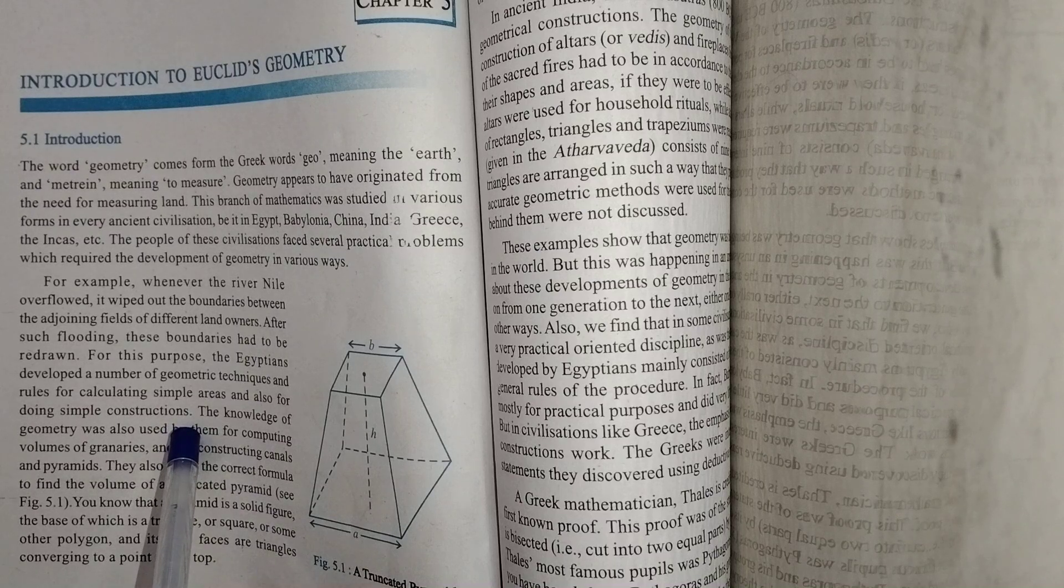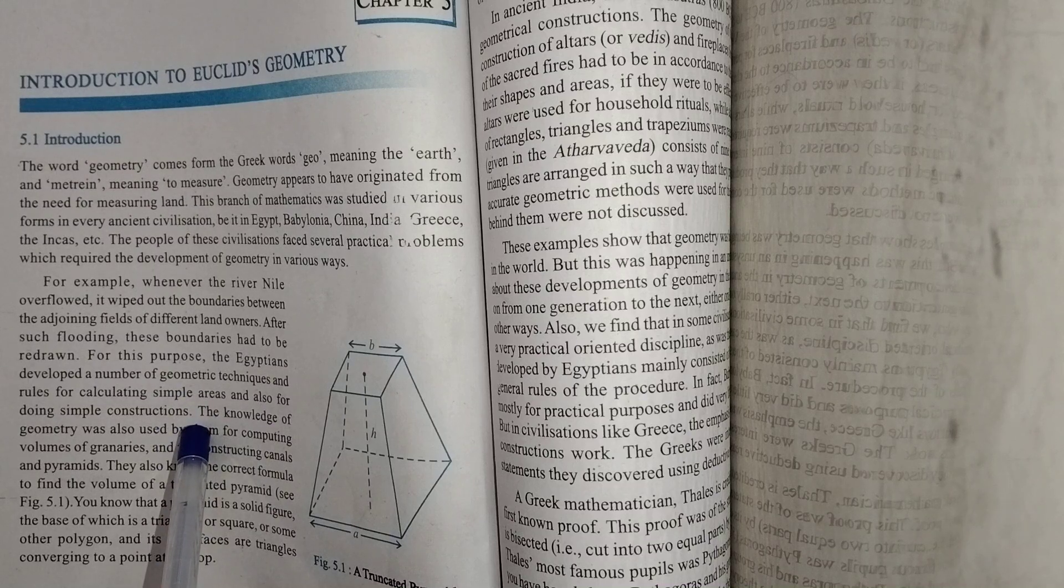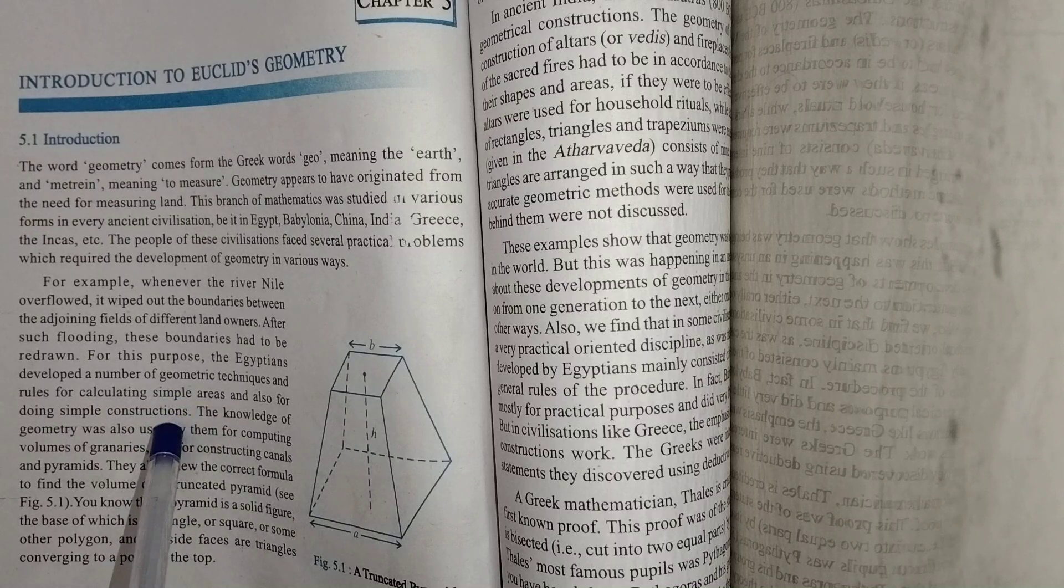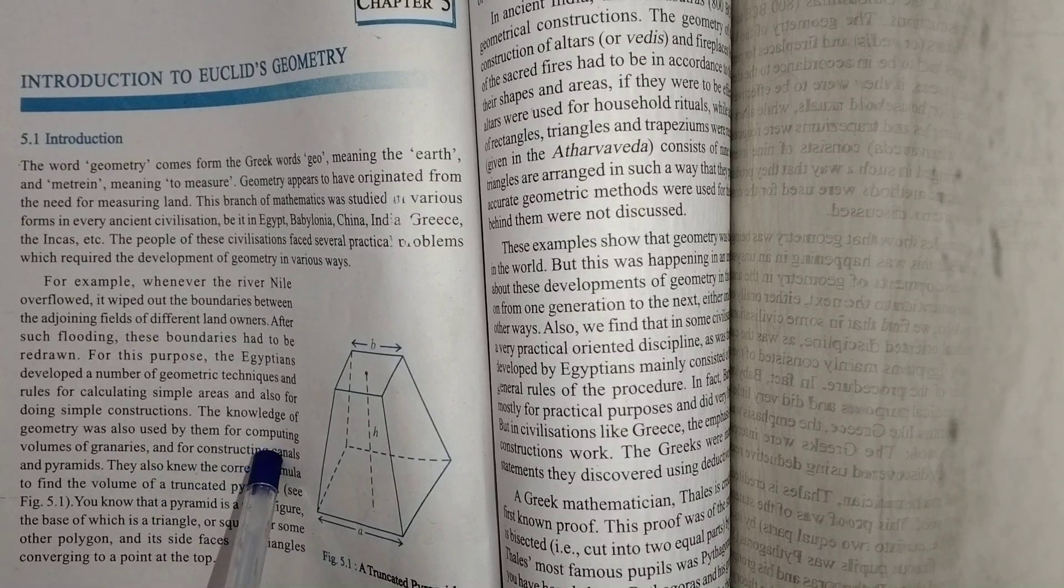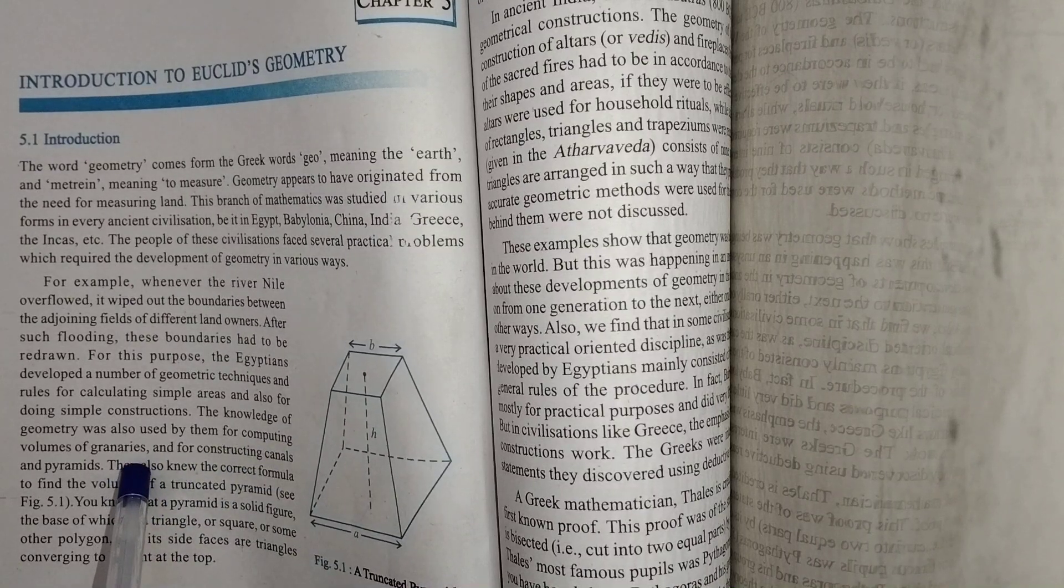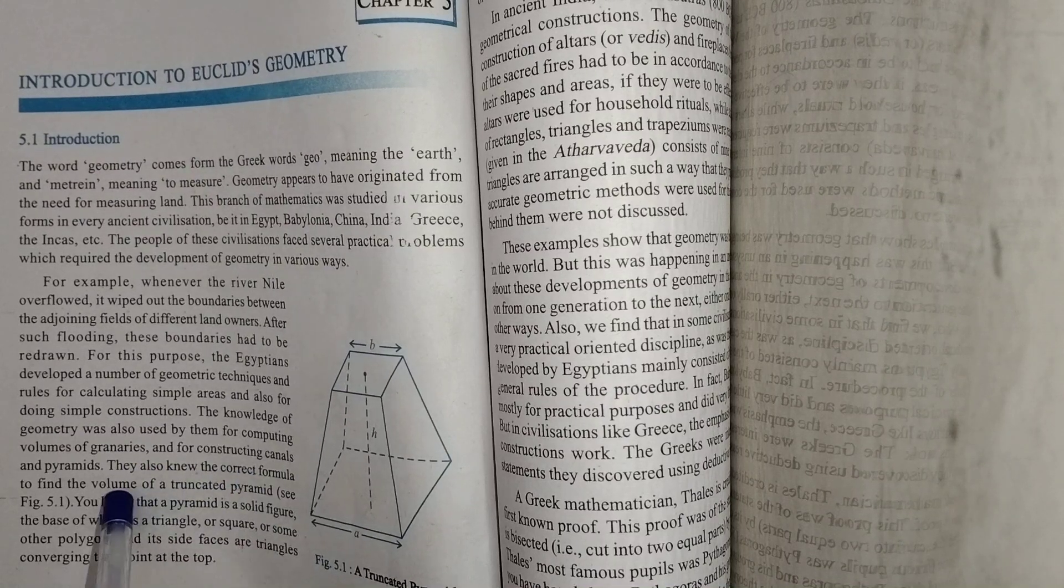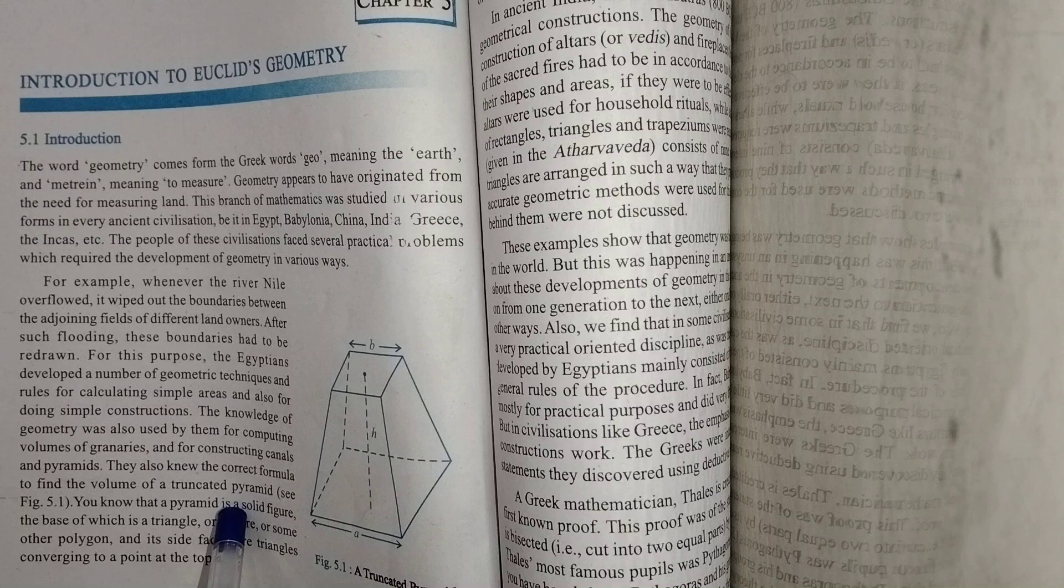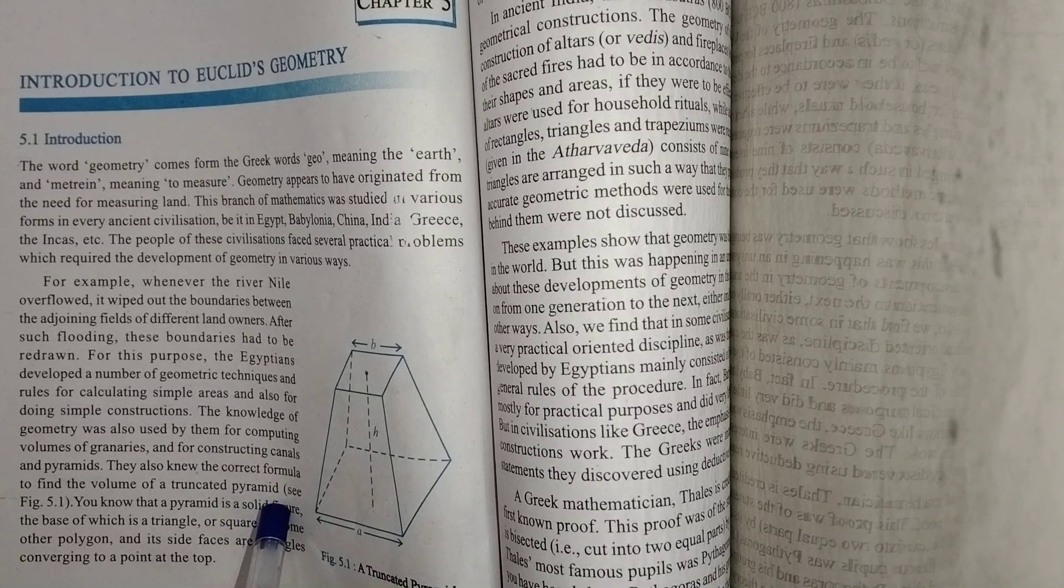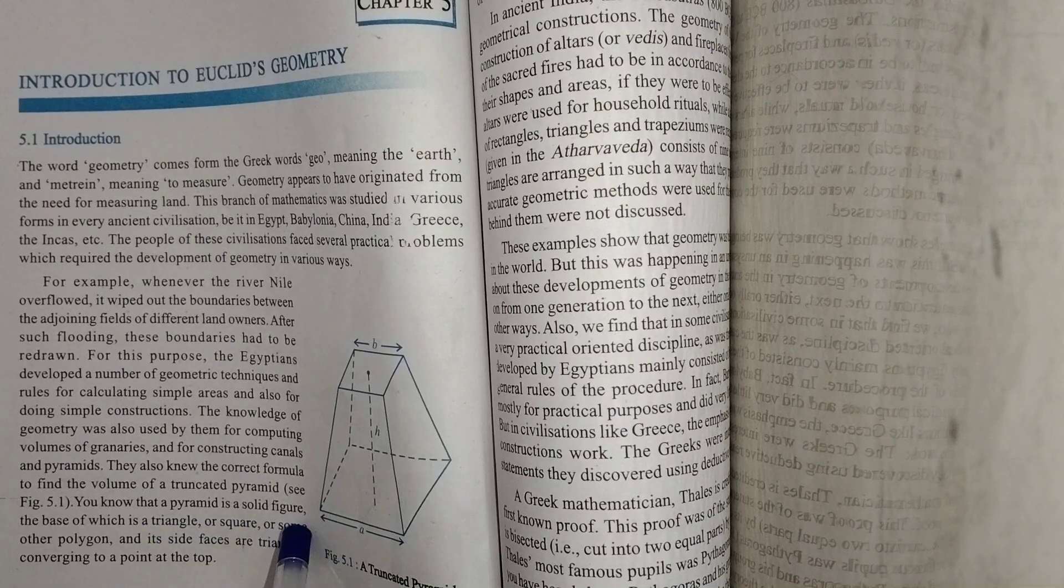The Egyptians developed a number of geometric techniques and rules for calculating simple areas and for doing simple constructions. The knowledge of geometry was also used by them for computing volumes of granaries and for constructing canals and pyramids. They also knew the correct formula to find the volume of a truncated pyramid.